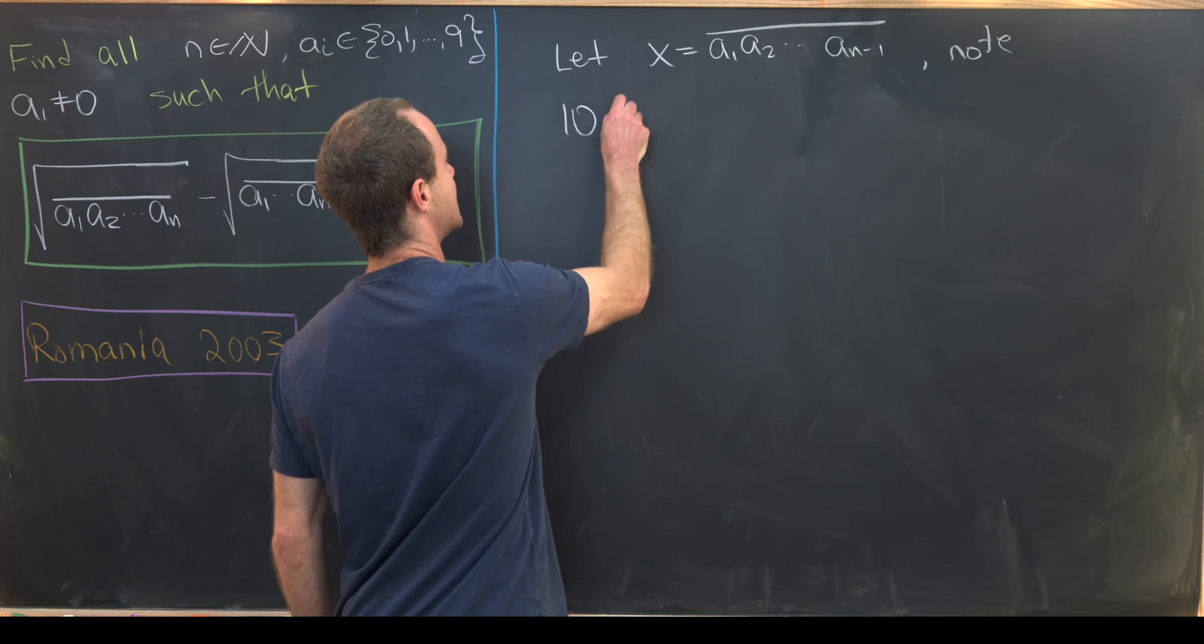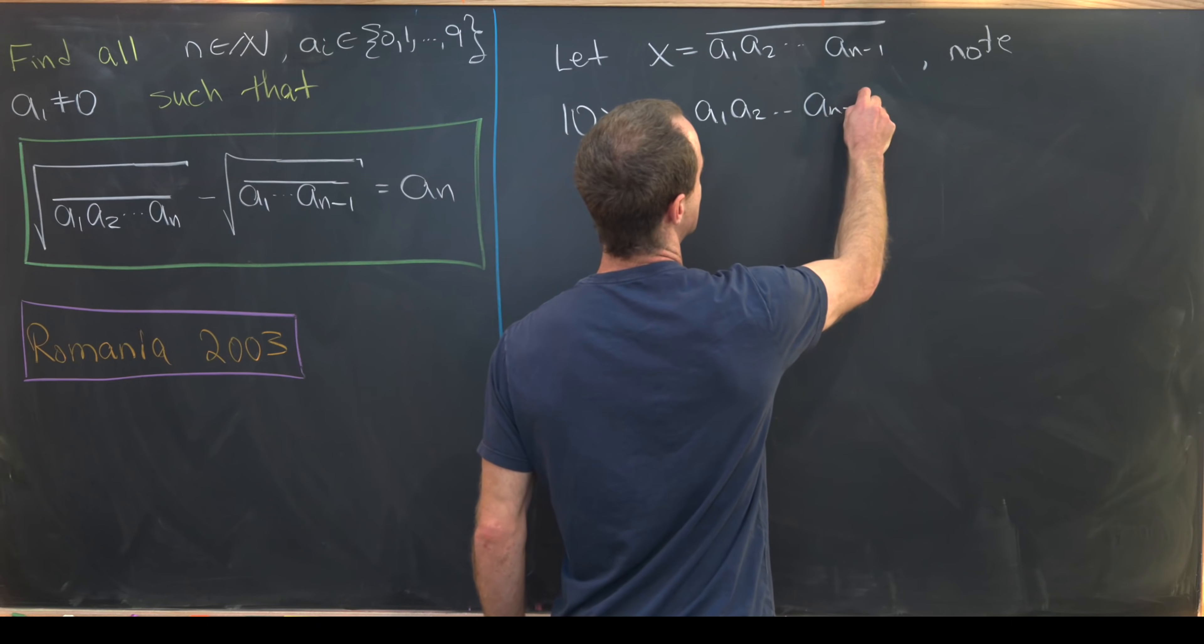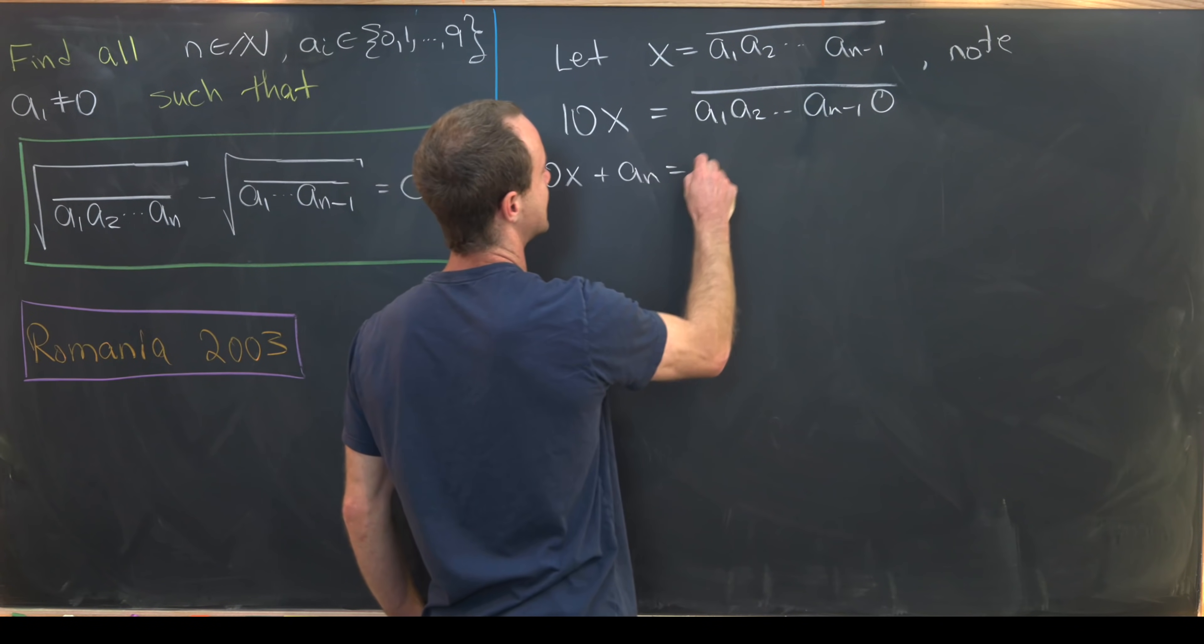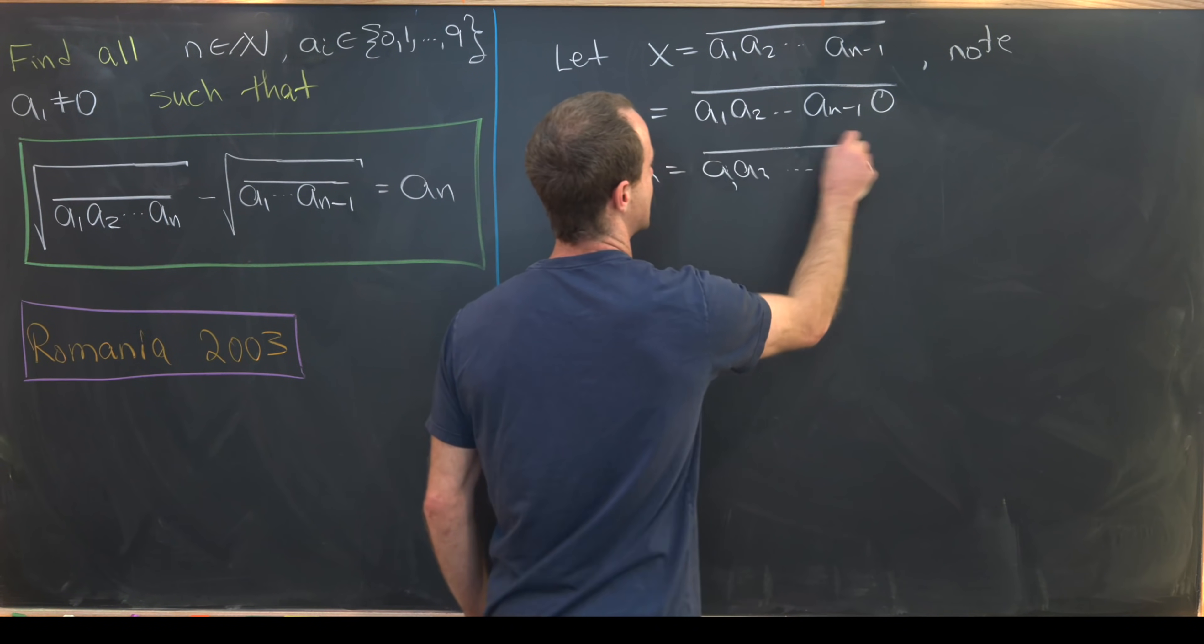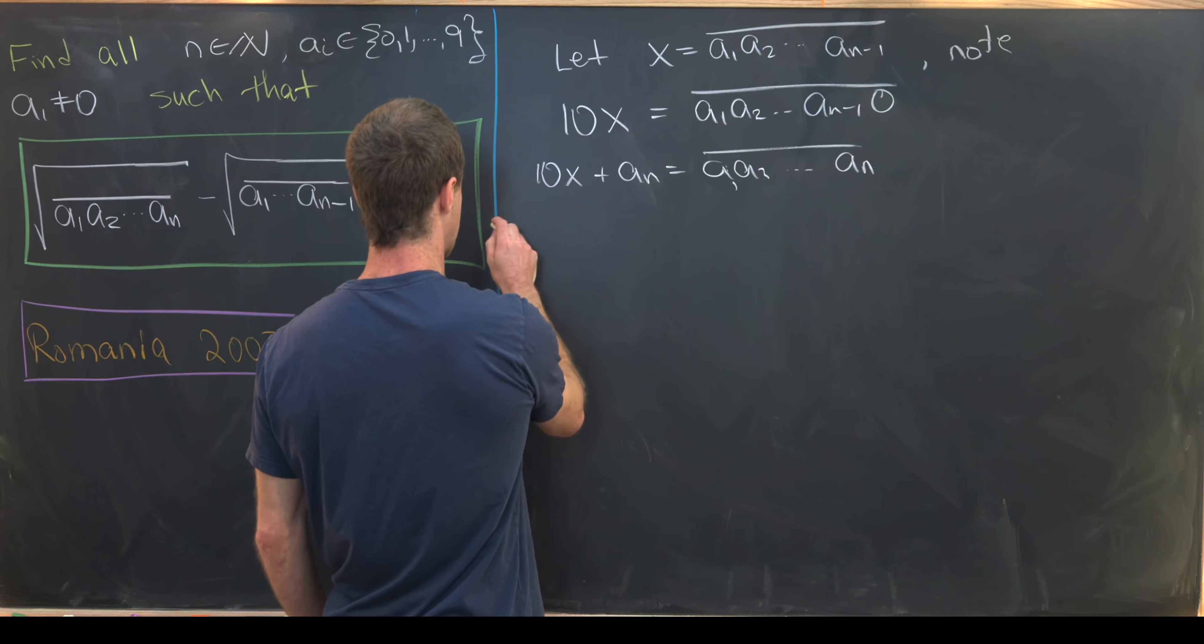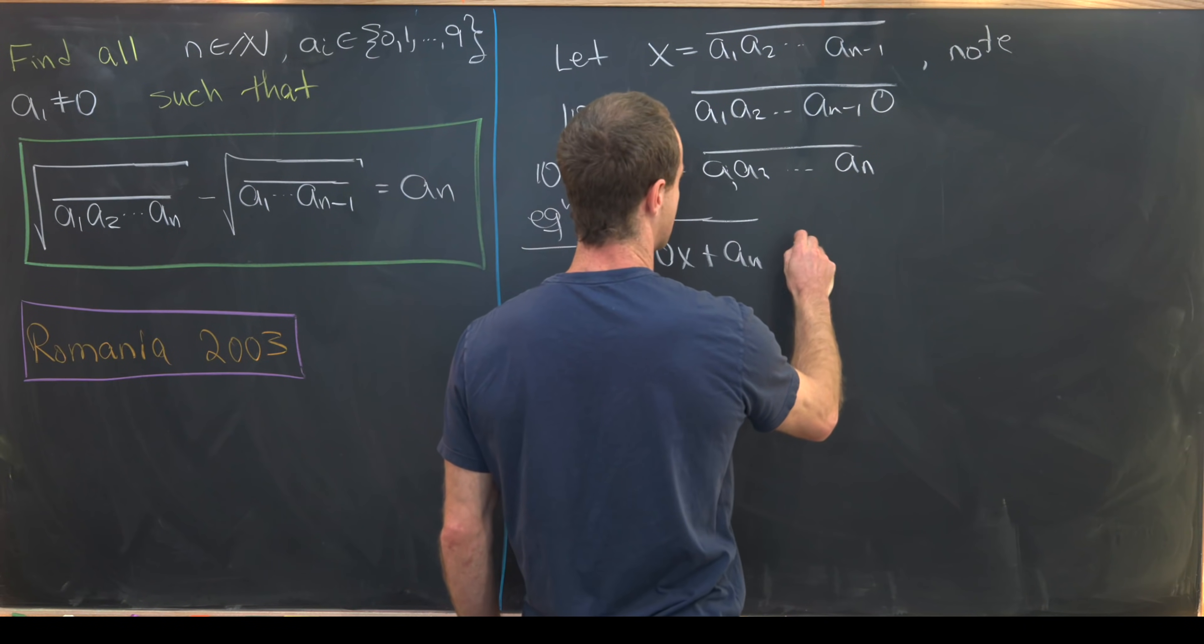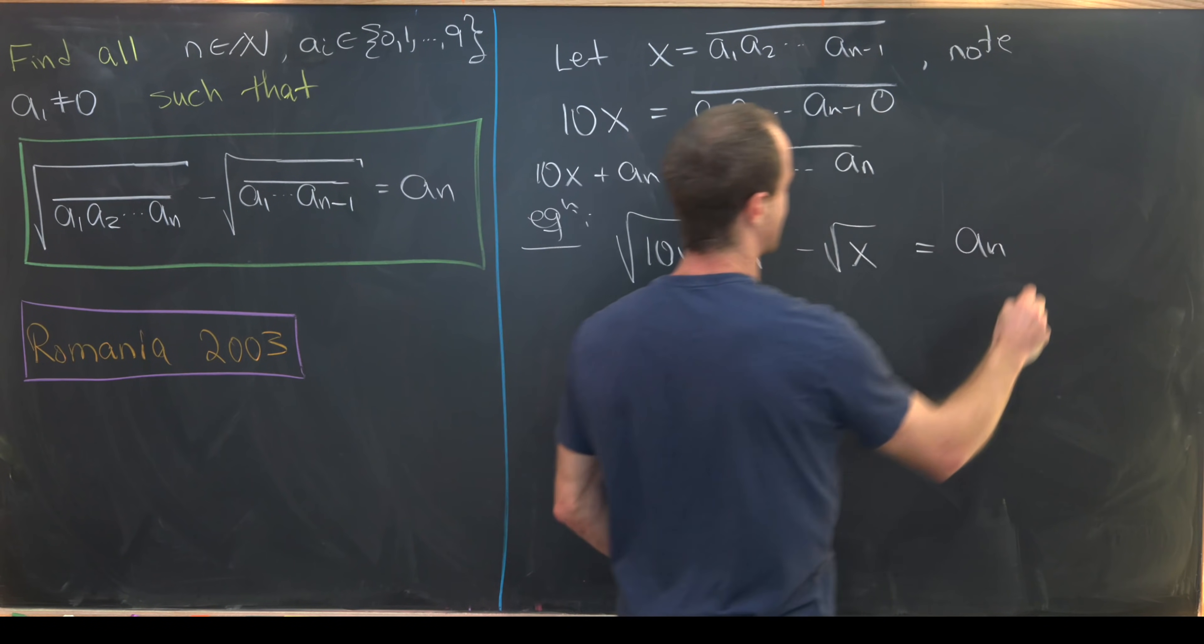So if we take 10 times x, we're going to get a1, a2, all the way up to an like that. So what does our equation look like now? Our equation is now the square root of 10x plus an minus the square root of x is equal to an.